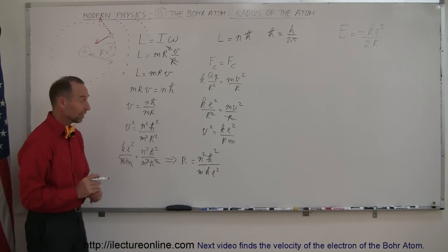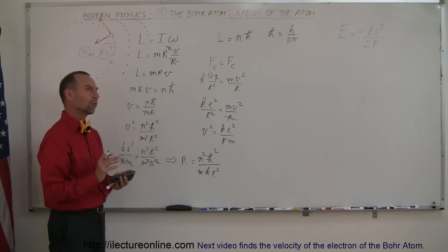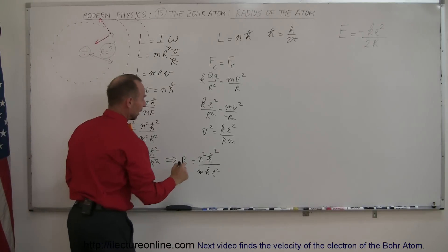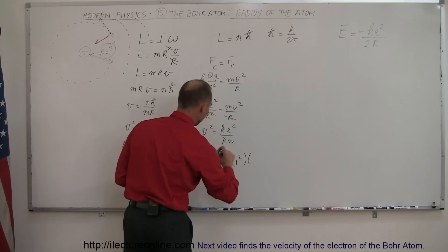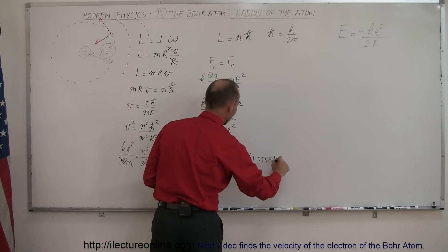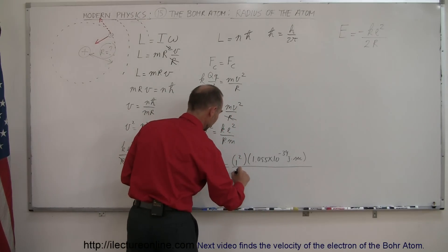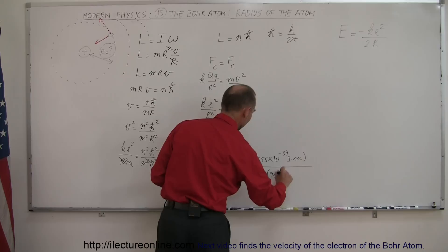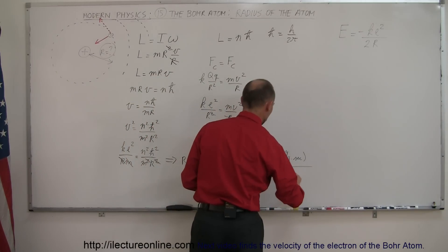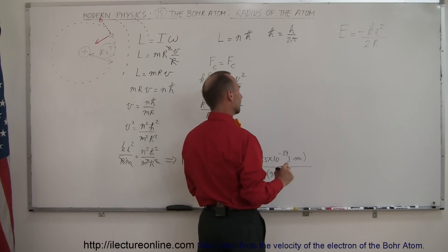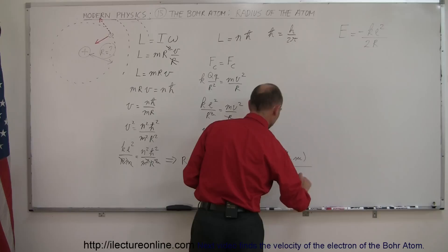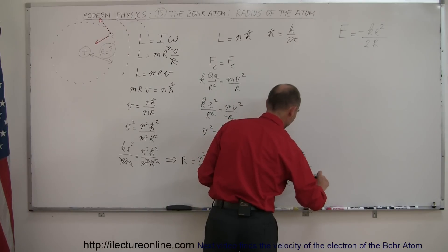I'm sure when they got to this point they must have been pretty excited. n is going to be one because we assume to be in the innermost energy level. So this is n = 1² times ℏ which is 1.055×10⁻³⁴ joule-seconds, divided by the mass of the electron 9.11×10⁻³¹ kg, multiplied by k which is 9×10⁹ N·m²/C², and then the electric charge 1.6×10⁻¹⁹ coulombs squared.